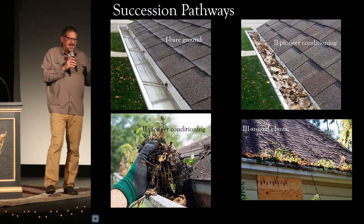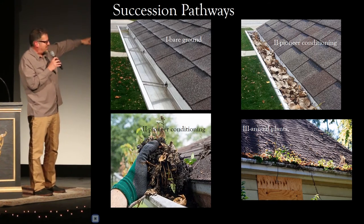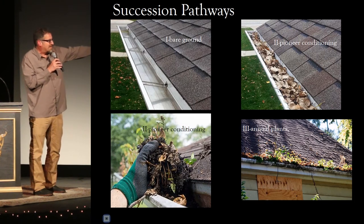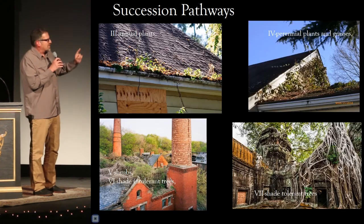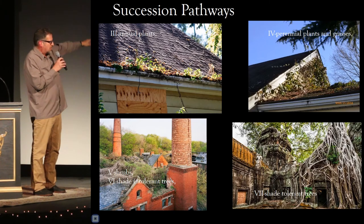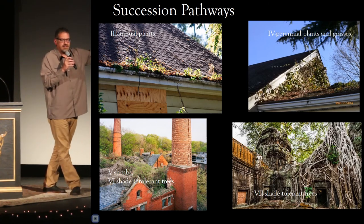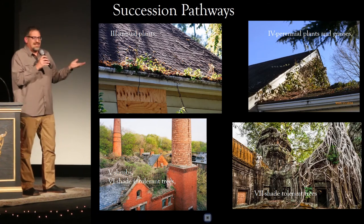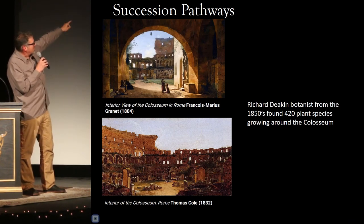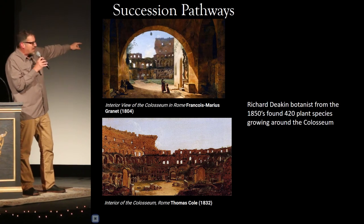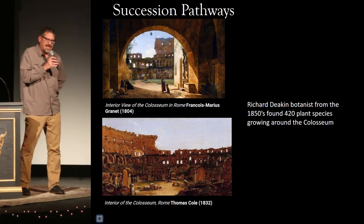So how do we link science and art together? This is what we're doing this weekend — cleaning leaves. If we don't clean our leaves, they'll start to rot and form those primary conditions. And then we get annual plants, then perennial plants with roots that tear your roof, then shade-intolerant trees, then shade-tolerant trees, and your house will turn into an archaeological relic. We can see that same ecological process captured by artists like Thomas Cole painting the Coliseum. A botanist did a survey of the Coliseum in 1850 and found 420 different plants growing on it. Since then, they've all been cleaned out to make it the tourist attraction it is today.